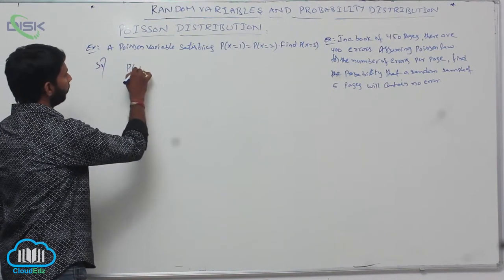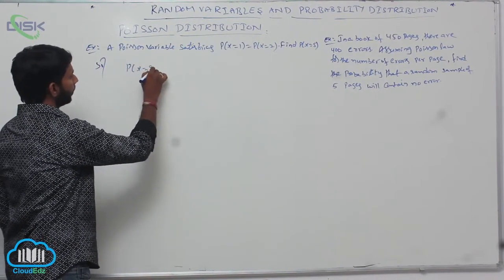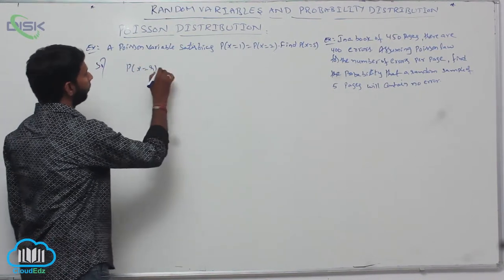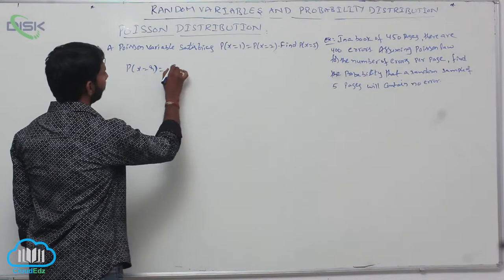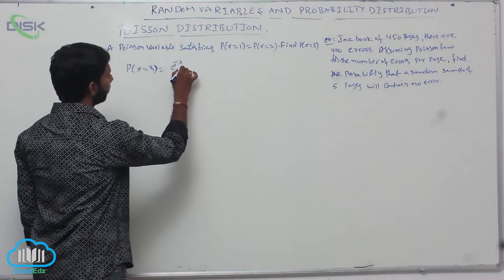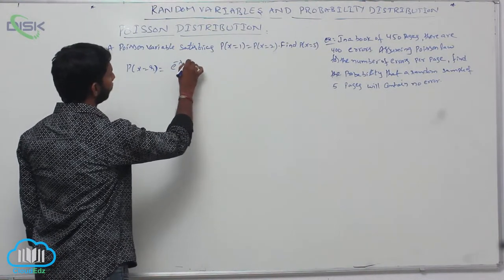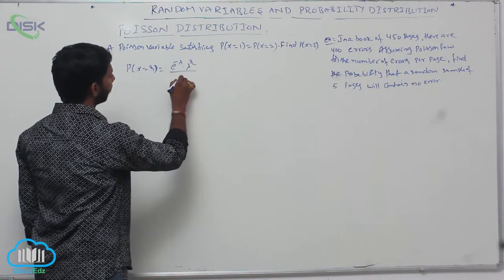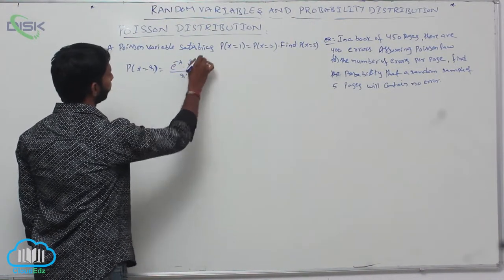For Poisson distribution, P(x=r) is equal to e power minus lambda, into lambda power r, divided by r factorial.